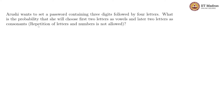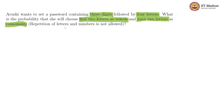In this problem, they are saying Arushi wants to set a password containing three digits followed by four letters. And then they are asking: what is the probability that she will choose the first two letters as vowels and the later two letters as consonants? Repetition of letters and numbers is not allowed.